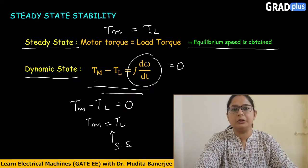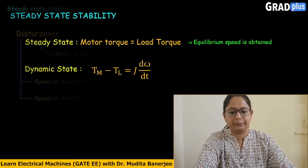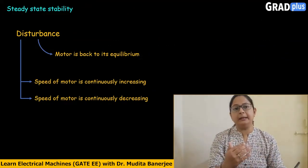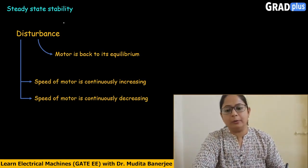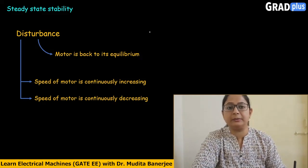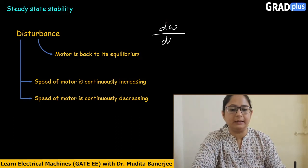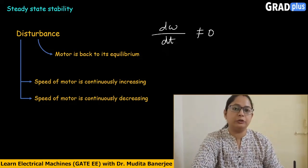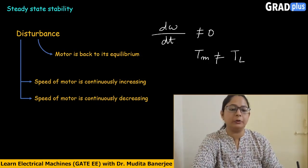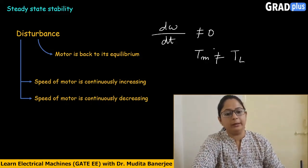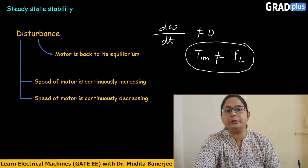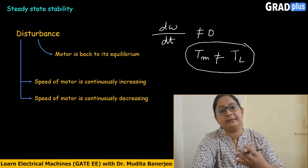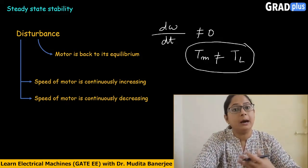The motor should operate in the steady state region only. Due to any disturbance, the speed may increase or decrease, so d-omega/dt is no longer zero. At that time, the motor torque is also not equal to the load torque. We then need to examine whether the motor is operating under stable or unstable conditions.